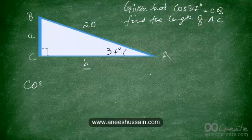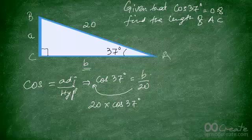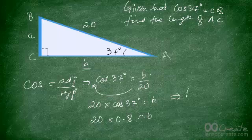We know that cos of any angle equals the adjacent side over the hypotenuse. So cos of 37 degrees equals B upon 20. Cross-multiplying: 20 times cos 37 equals B. Since cos 37 is 0.8, we get 20 times 0.8 equals B, therefore B equals 16.